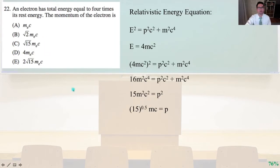Problem 22. An electron has total energy equal to 4 times its rest energy. The momentum of the electron is... One of my favorite equations is the relativistic energy equation.